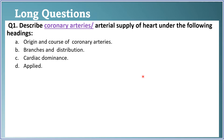First, we will consider long questions. There are three long questions which can be asked. First is on the coronary arteries or arterial supply. Second is from lungs, that is bronchopulmonary segments. Third, and very important, is the thoracic duct.